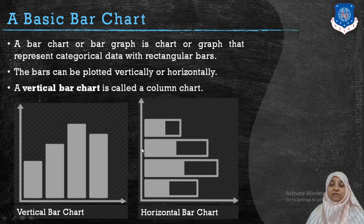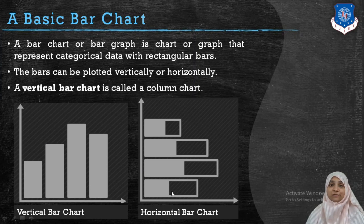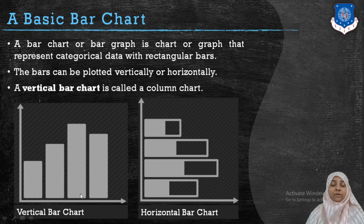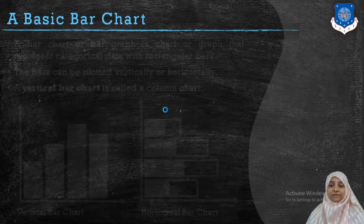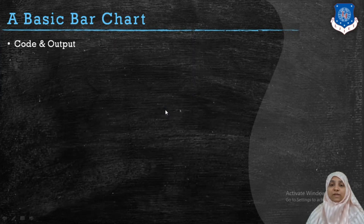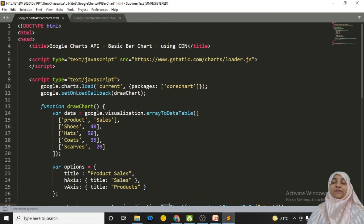Let's look at the basic bar chart. There are two different types: the orientation can be horizontal or vertical. A horizontal bar chart in Google Charts is called a bar chart, and a vertical bar chart is called a column chart. We will see an example of both.